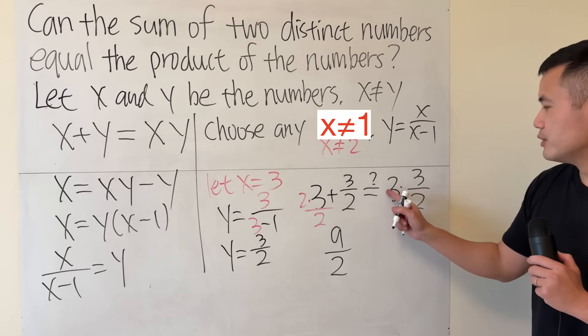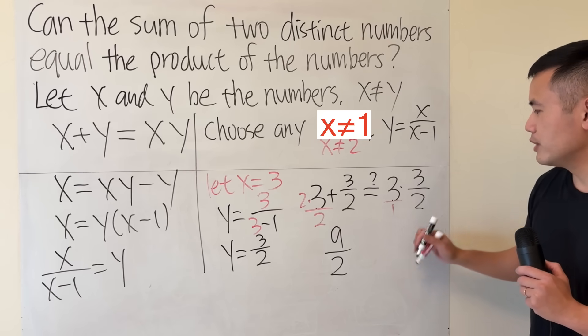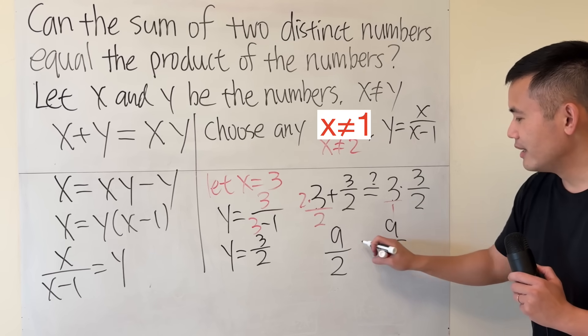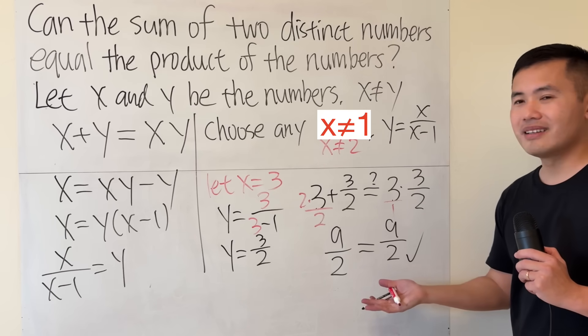Now here we are multiplying. 3 is like 3 over 1. Multiply 3 and 3, that's 9. 1 times 2 is 2. Aha, they are the same thing.